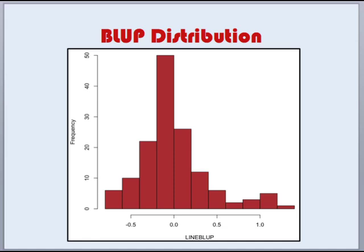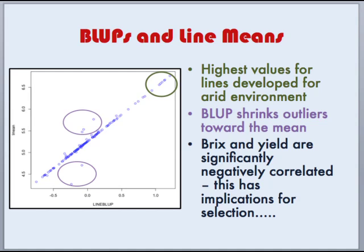We may want to take a look at the distribution of our BLUPs. To further help you understand why selection based on BLUPs may be beneficial, we can plot out the means for each line as well as our BLUPs. You can see in purple that BLUPs tend to shrink our outliers back towards the mean. We can also see in this graph that the highest values are for lines that were developed for an arid environment. But we need to keep in mind that degrees Brix and yield are significantly negatively correlated, and this will have implications for selection.